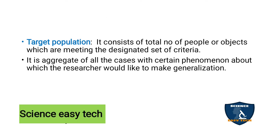Target population consists of the total number of people or objects meeting a defined set of criteria. It is the aggregate of all cases with certain phenomena about which the researcher would like to make generalizations. For example, in hypertension studies, sometimes only primary hypertension patients are taken, or sometimes people with both hypertension and diabetes mellitus. The target population has a specific set of criteria, and the findings of the study will be generalized to it.